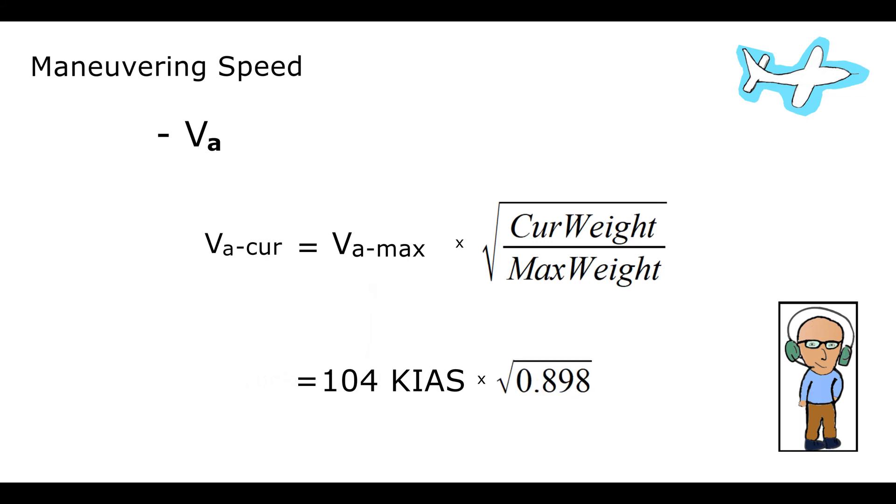We take that result and compute its square root and multiply that number times our original VA, which was 104.